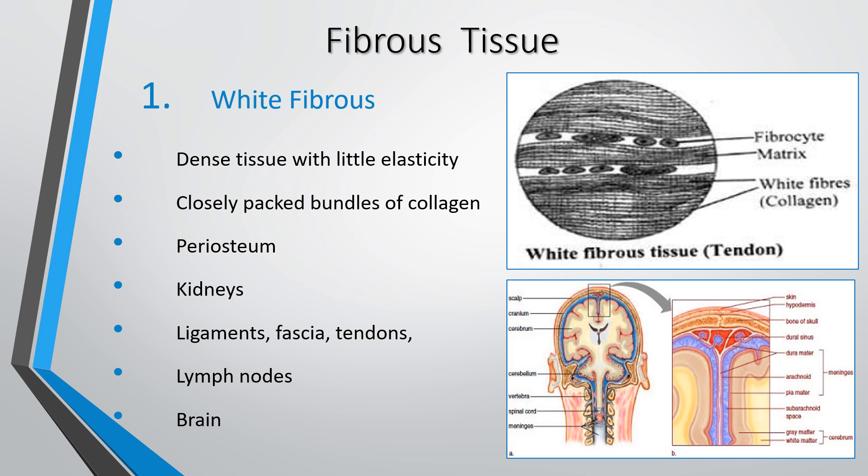Fibrous tissue is also of two types: white fibrous and yellow elastic. White fibrous tissue is dense with little elasticity, made of closely packed bundles of collagen. It's very strong, used for ligaments, fascia and tendons. The periosteum of the bone, the outside of the kidneys, ligaments, fascia and tendons within muscles, lymph nodes, and parts of the brain are all made of white fibrous tissue.